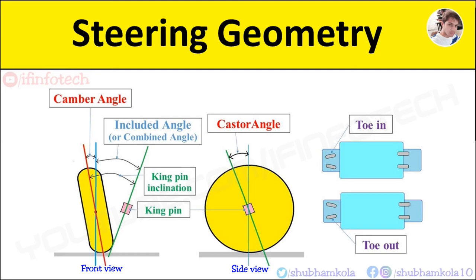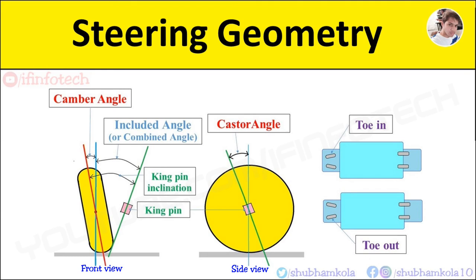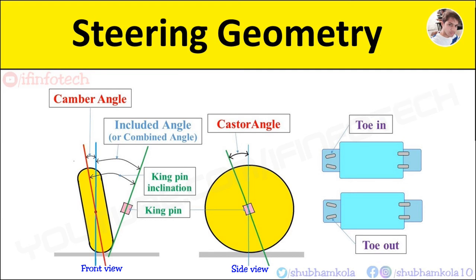So next we see toe in and toe out. As shown in figure, the amount by which front wheels are set closer together at front than rear when vehicle is stationary is called as toe in. And amount by which wheels may be set closer at rear than front when vehicle is stationary is called as toe out.